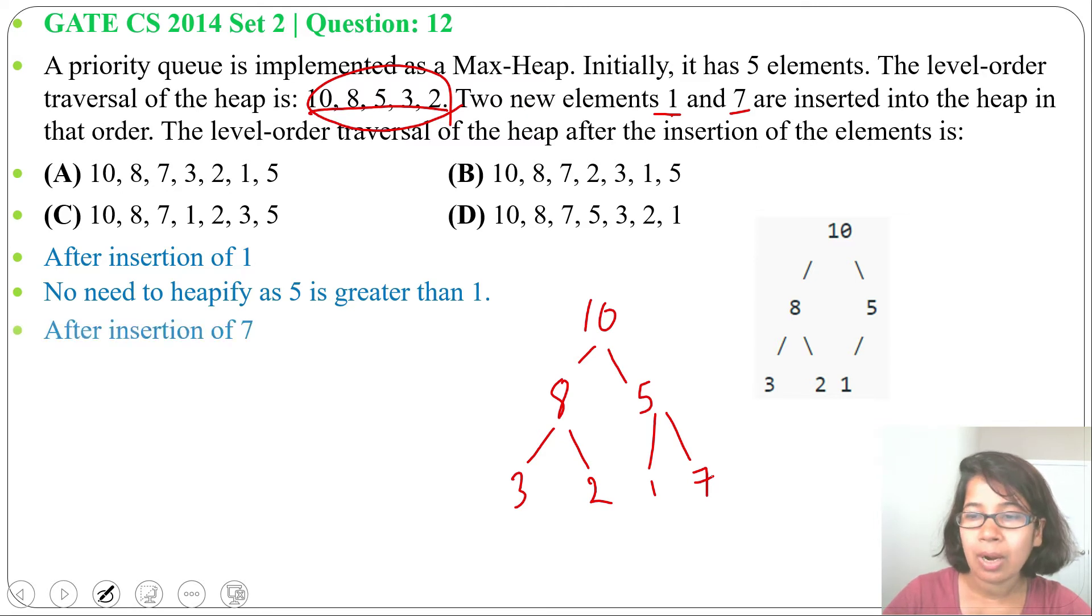After insertion of 7, we need to heapify it as 5 is less than 7, so we'll exchange these two. 7 will come here and 5 will come here. So after exchange, we got this. Let me write in level order.